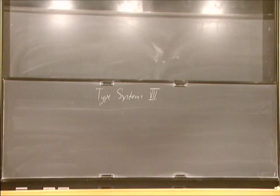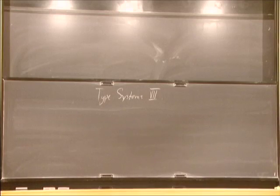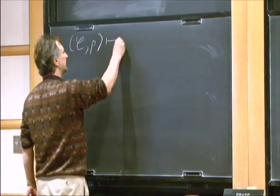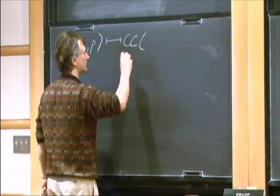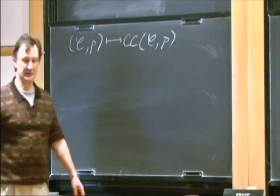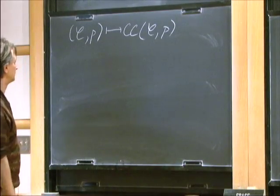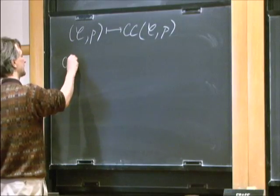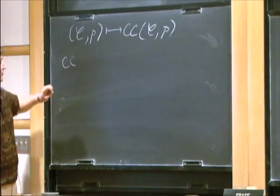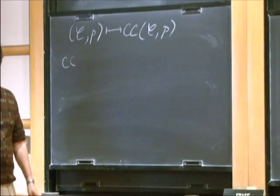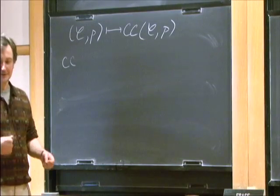There are two somewhat disjoint topics which I planned for today. The first one: I want to say a few more general words about the construction which takes a pair consisting of a category and a universe in the category and assigns to it a C-system. I want to prove that any C-system is canonically isomorphic to a C-system which arises from a universe in a category — so any C-system can be produced in this way.